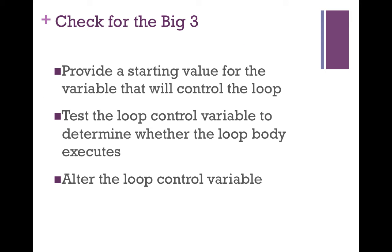When working with while loops, check for the big three. First, make sure you have a starting value for a variable that will control your loop — it needs to be initialized and declared before your loop begins. Inside the while condition, we test the loop control variable to determine whether the loop body executes; if true, we execute the body, if false, we exit. We also must remember to alter our loop control variable inside the loop body. If we don't alter it, we have an infinite loop — the condition will never change to false. We have to ensure the loop control variable is changed so that our condition will eventually become false and exit the loop.